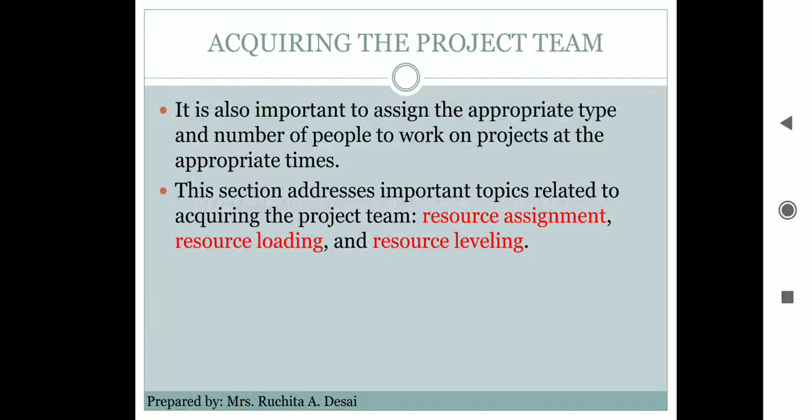The Human Resource Management Plan is the first input to this process; it tells us how, when, and what type of skills we need in a project. The second input is Organizational Process Assets, which covers procedures for hiring people and the time periods for publishing vacancies. These are the basic inputs required for acquiring the human resource for a project.